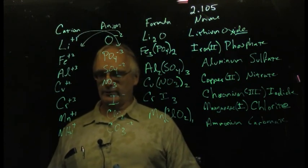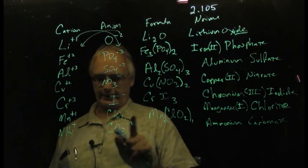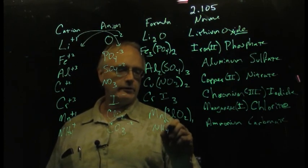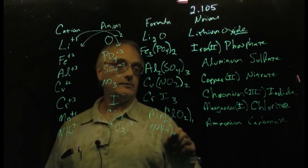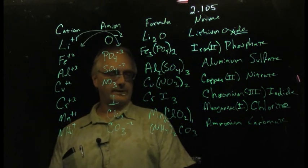And then writing in the formula, we do have to do the crossover trick again. One carbonate, but two ammoniums. If I need two ammoniums, polyatomic, parentheses, 2, CO3. And there is my ammonium carbonate.